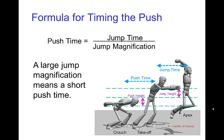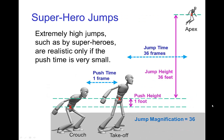Since we're dividing by the jump magnification, if we have a big jump magnification, that means there's a short push time. The character pushes off in a very short time, which is necessary when the jump magnification is very large. This is an issue in superhero jumps — jumps that are extremely high.